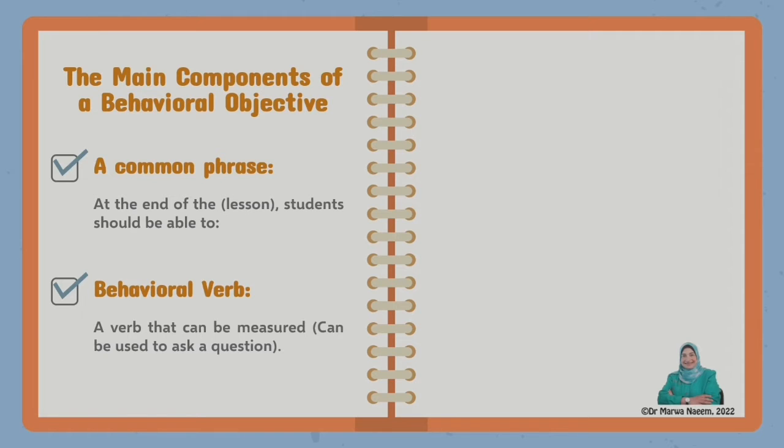That's why words like or verbs like write, pronounce, speak, or listen and fill in the spaces, for instance, these are all behavioral verbs because you can ask a question using these verbs. On the other hand, some verbs are not behavioral like know and learn. You cannot ask a question using know something or learn something. So please pay attention to the conditions of a behavioral verb.